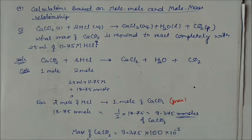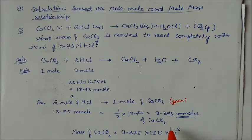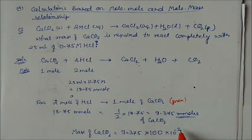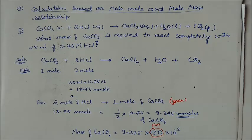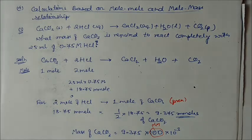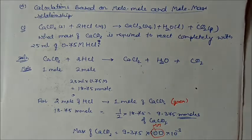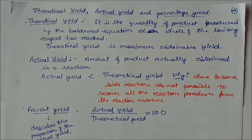To convert millimoles to grams: mass = moles × molar mass = 9.375 × 10⁻³ × 100 = 0.9375 grams of CaCO₃. This is the weight of calcium carbonate required to react with that amount of acid.